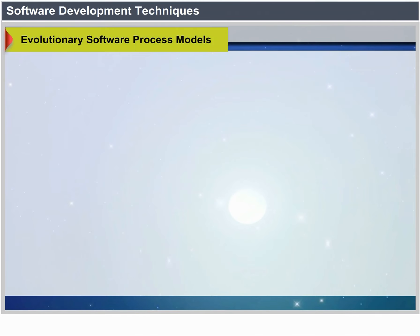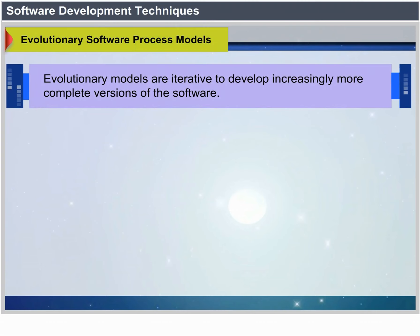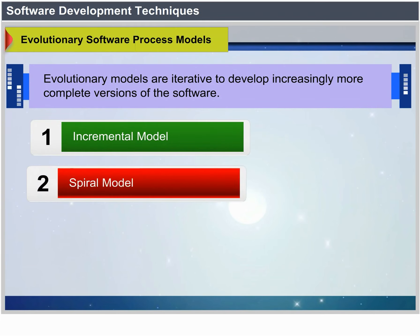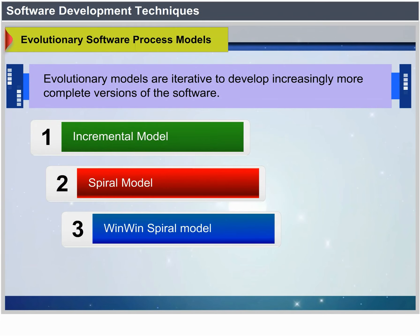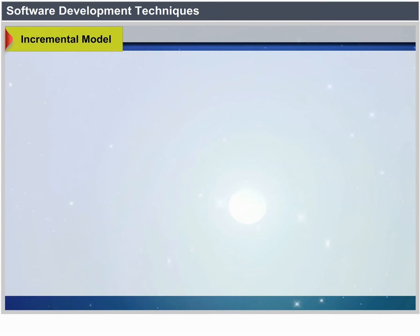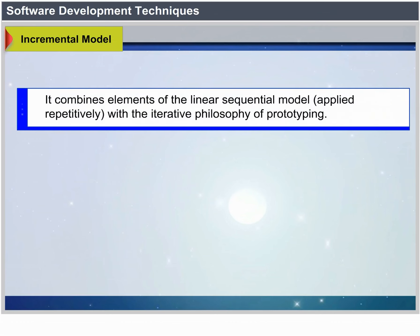Evolutionary Software Process Models are iterative, developing increasingly more complete versions of the software. Types include the Incremental Model, Spiral Model, Win-Win Spiral Model, and Concurrent Development Model. The Incremental Model combines elements of the linear sequential model applied repetitively with the iterative philosophy of prototyping.